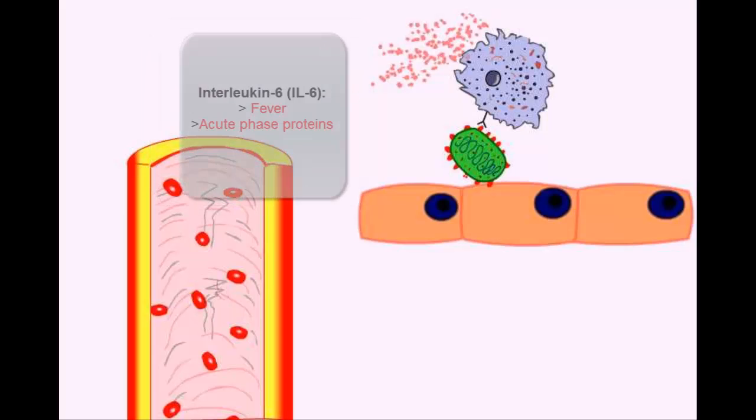The macrophage also secretes interleukin-6, which causes fever and stimulates the production of acute phase proteins.